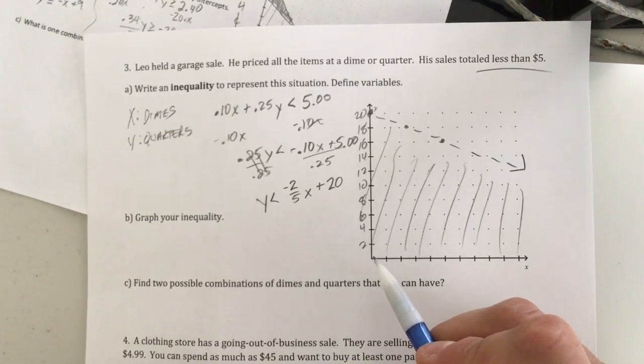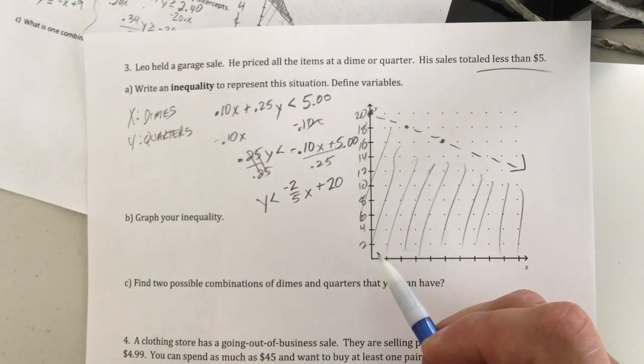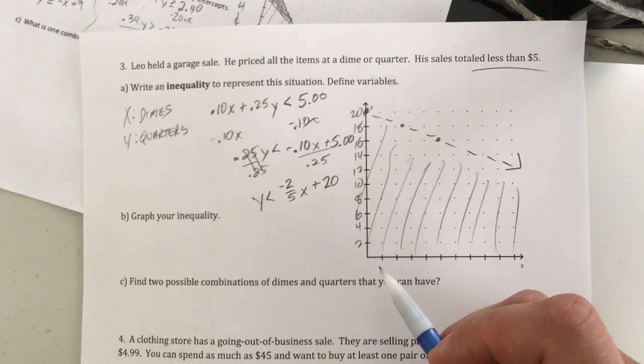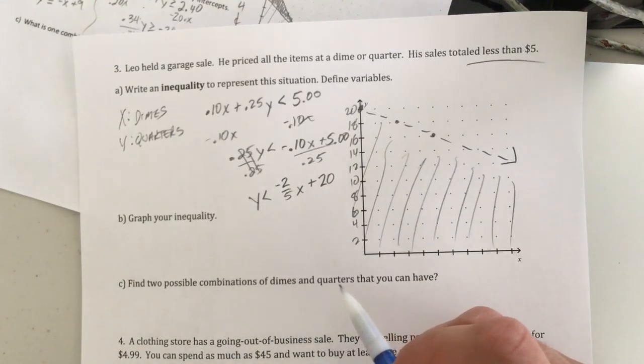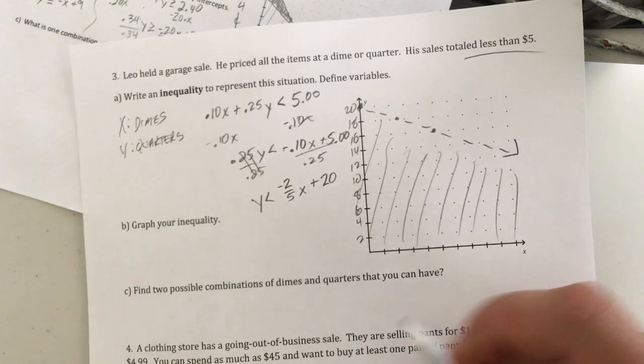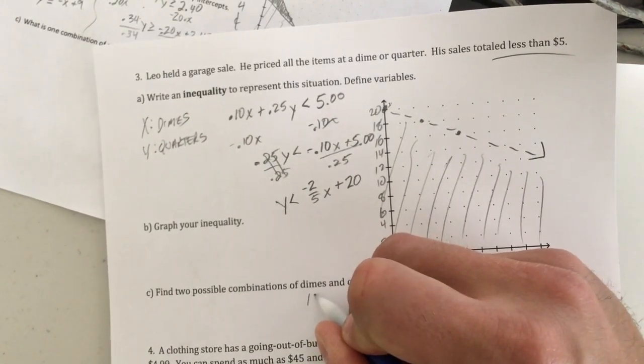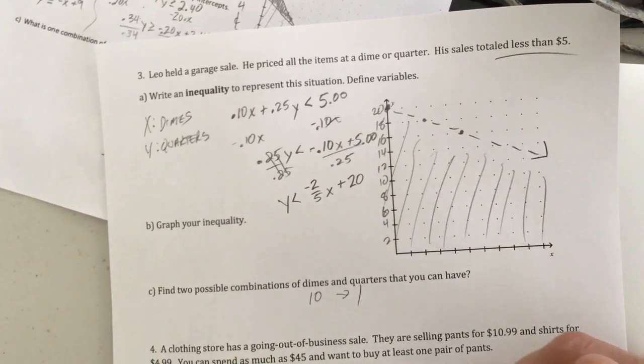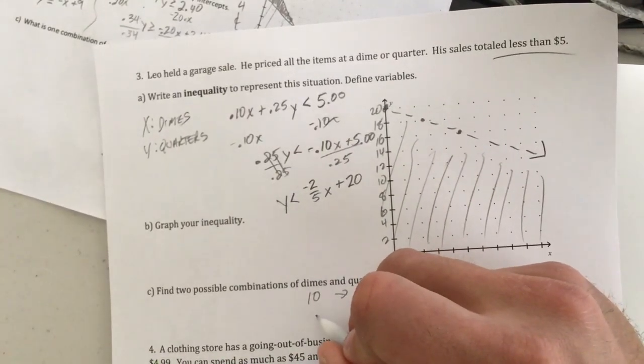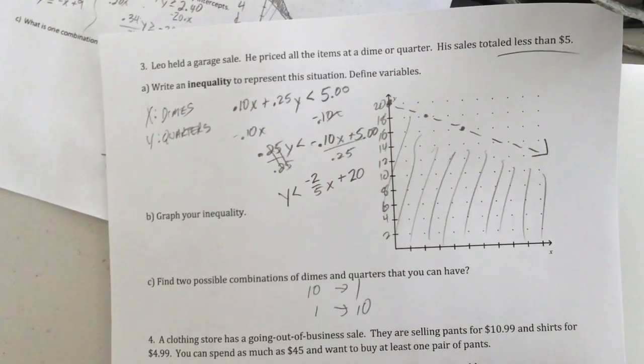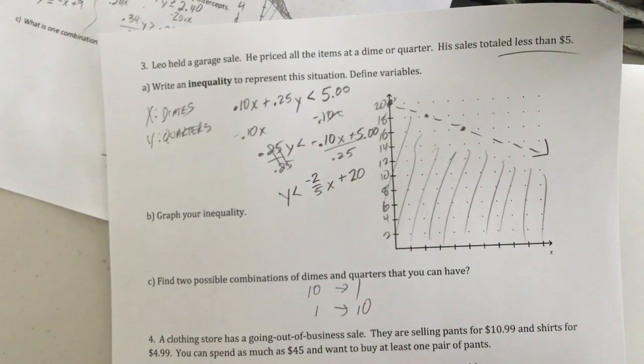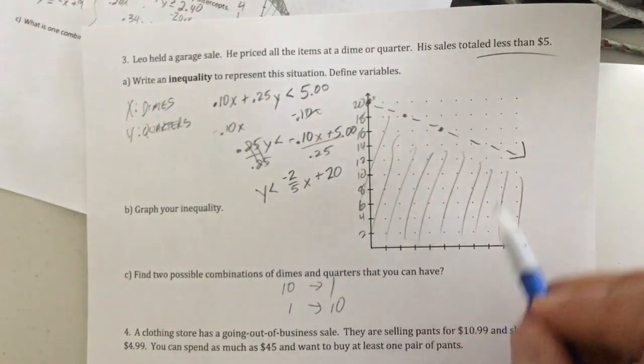So that means all of this are possible solutions. Maybe he sold nothing of either thing. I hope not for his sake. Hopefully Leo made some money, but find two possible combinations of dimes and quarters that you could have. He could very easily have 10 dimes and one quarter. He could just as easily have one dime and 10 quarters. All that works. All right. Cause it's all in this shaded region.